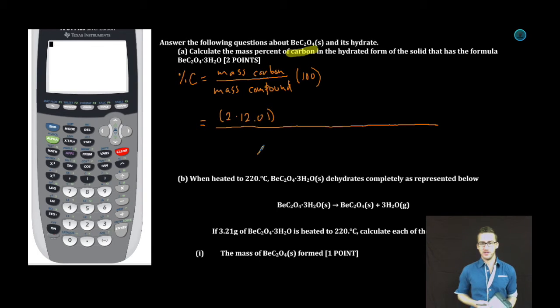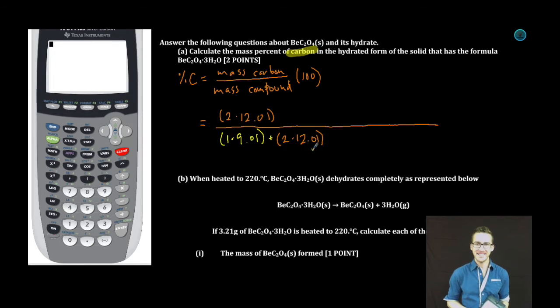The mass of the compound. Well, I've got one beryllium, and its molar mass is 9.01. I'm going to add to that the mass of the two carbons. So two times 12.01. But we're not done. We also have four oxygens, and we have three waters. Remember, it's a hydrated compound.